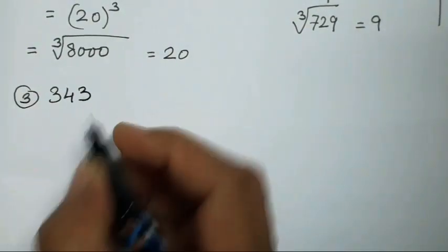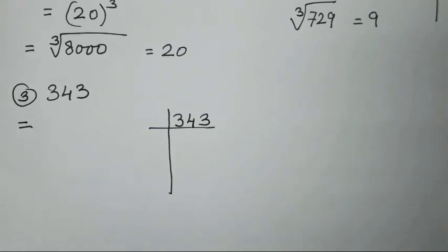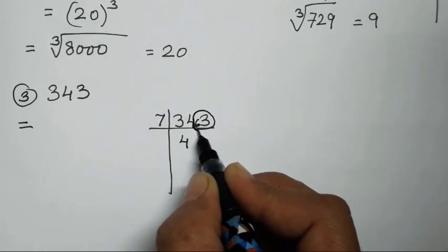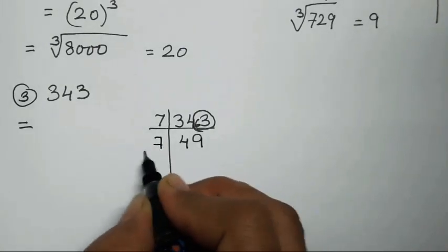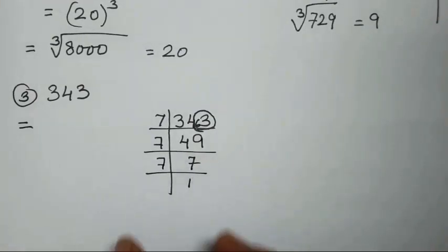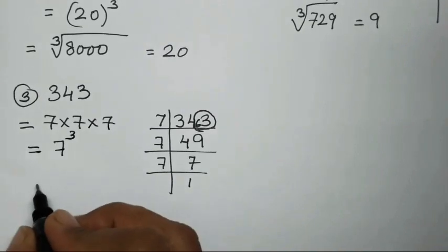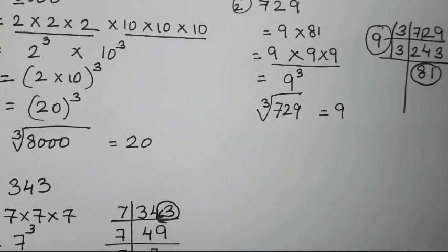For the third question, 343, I will show you the factorization method. We need to find which table gives us 343, so we factorize using the table of 7. 7 fours are 28, so 343 divided by 7 gives 49. Then 7 nines are 63 — wait, 7 sevens are 49 and 7 ones are 7. So we get 7 into 7 into 7. Since we have 7 three times, 7 to the power of 3 equals 343, so the cube root of 343 is 7.